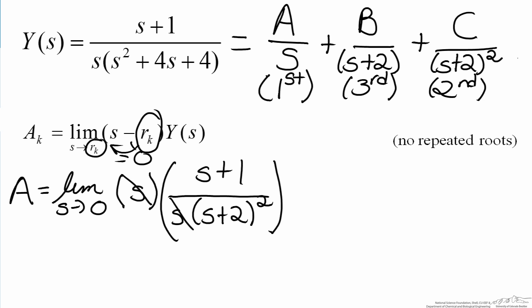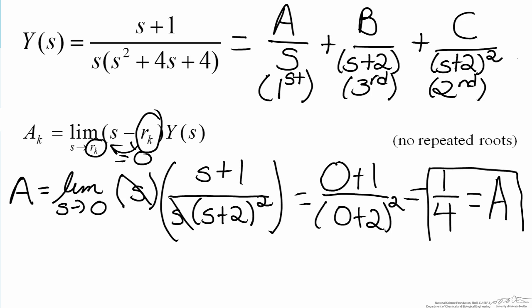So what we now do is evaluate the limit. So when we evaluate the limit, this will just become zero plus one, since we're evaluating it as s approaches zero, divided by zero plus two squared. And this easily gets us our value for A, which is a quarter. Note here that we very easily find the root without having to do any significant factoring out of terms, which happens when you try to find a least common denominator using partial fractions.